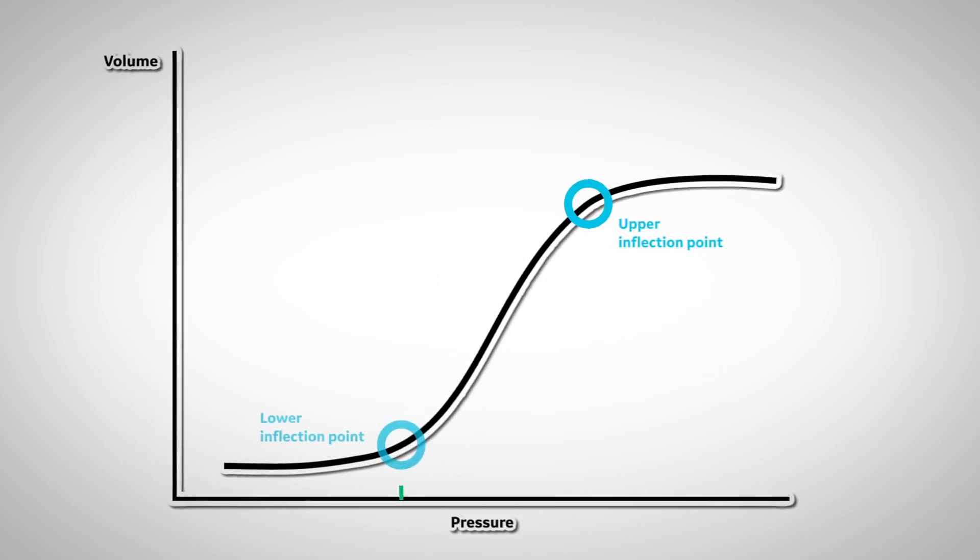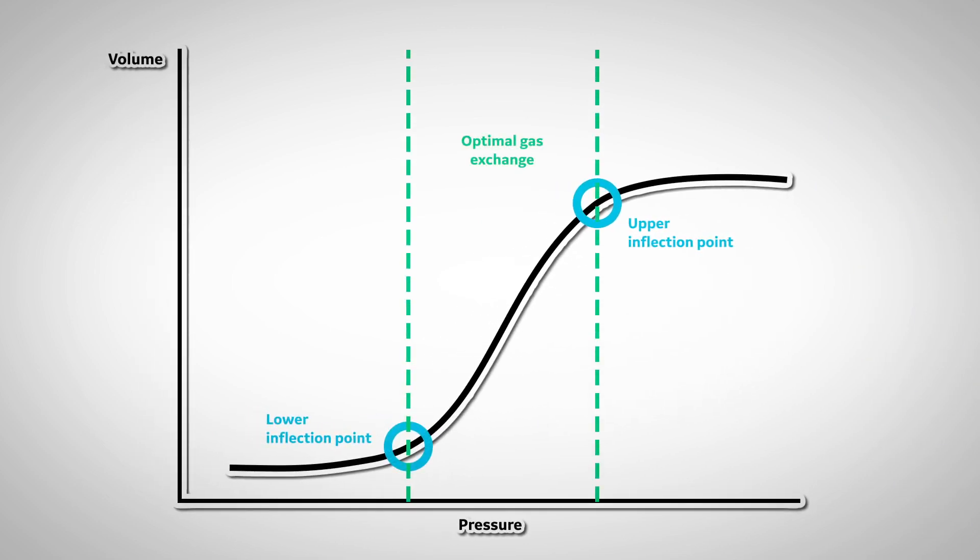The goal is to minimize changes between the upper and lower inflection points as this ensures optimal gas exchange at the alveolar level.